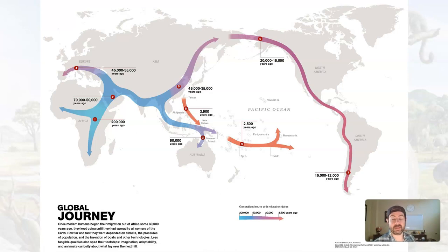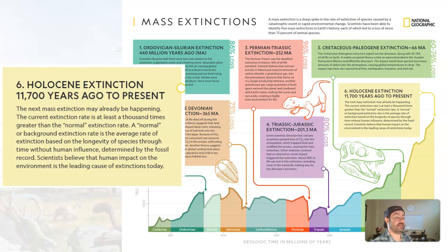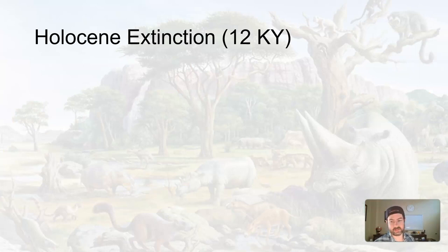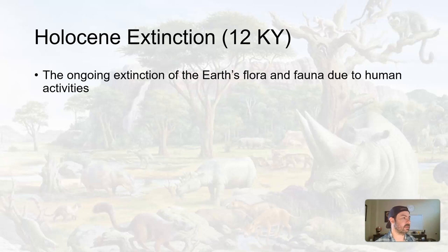That brings us to the last part of the Holocene, which is the last part of the Quaternary period and the last part of the Cenozoic era: the Holocene extinction, which has been occurring for about the past 12,000 years. This is an interesting mass extinction because it is not driven naturally — it is almost 100% human-caused. It is the extinction of Earth's flora and fauna due to human activities.